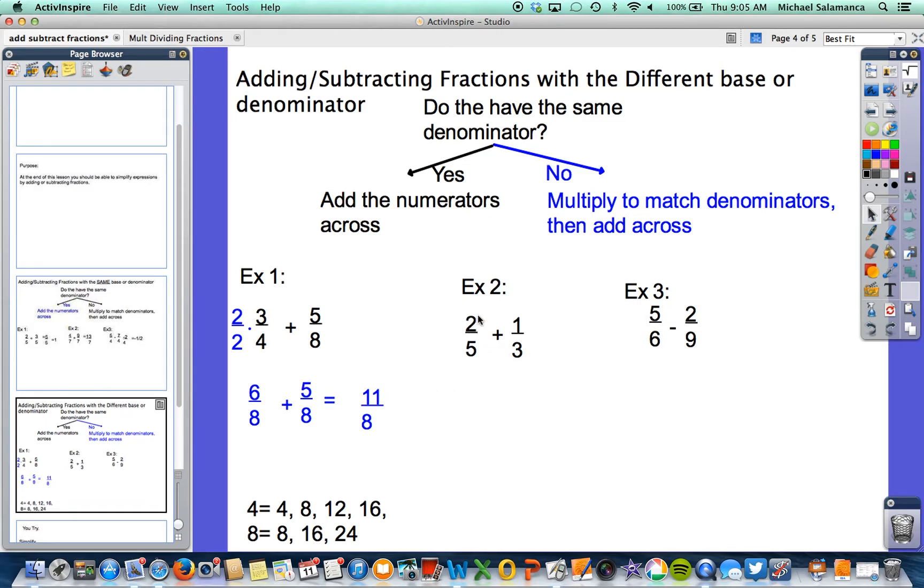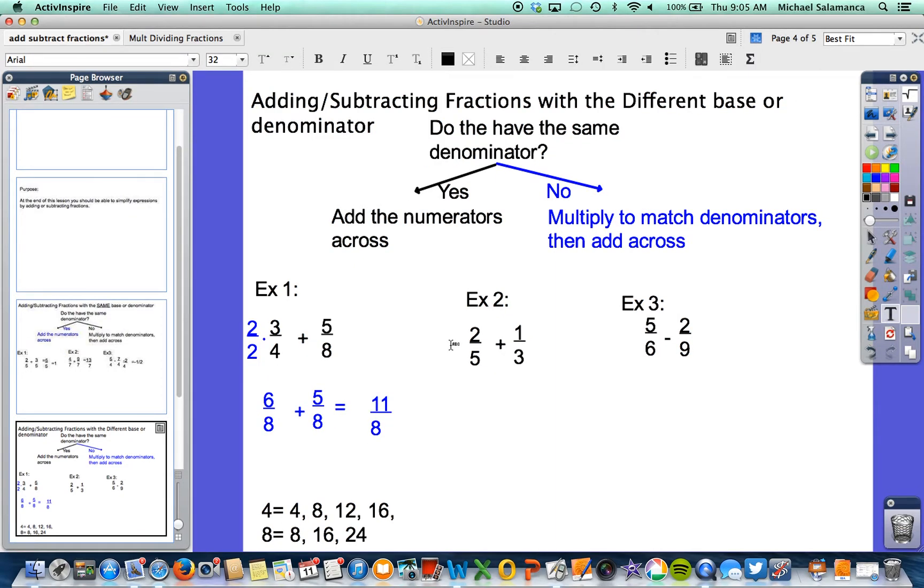For example 2, we have 2 fifths plus 1 third. Again, notice that denominators are different. But in this instance, their common denominator is 15. So we're going to have to multiply both numbers. So for the 2 fifths, we're going to multiply the denominator and the numerator by 3. But if we did that to the 1 third, that's not going to give us 15. So let's simplify that. That becomes 6 fifteenths.